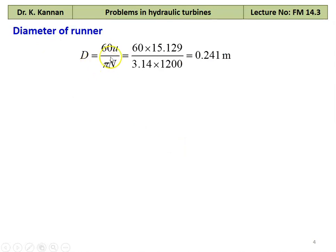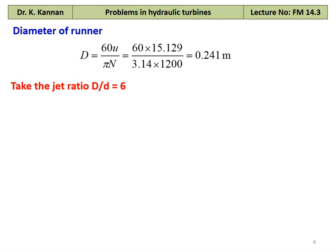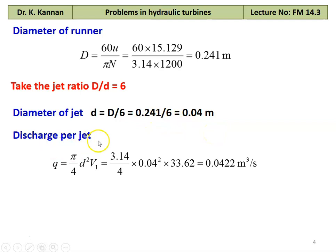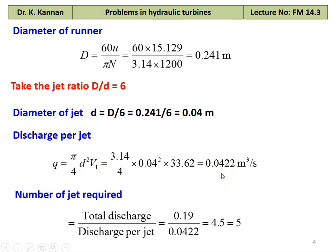Diameter of the runner D = 60U / (π × N) = 60 × 15.129 / (3.14 × 1200) = 0.241 m. Assuming jet ratio D/d = 6, jet diameter d = 0.241 / 6 = 0.04 m. Discharge per jet q = (π/4) × d² × V1 = (3.14/4) × 0.04² × 33.60 = 0.0422 m³/s. Number of jets = total discharge / discharge per jet = 0.19 / 0.0422 ≈ 5 jets required.